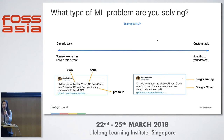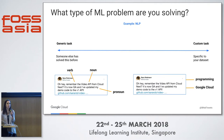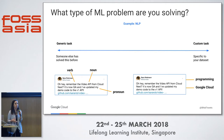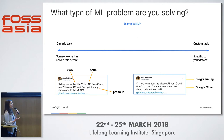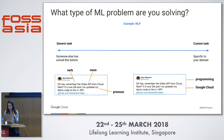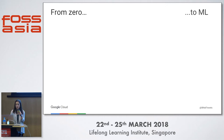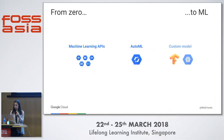Thinking about this in terms of natural language processing: if I just want to extract parts of speech from a tweet, that's a pretty common NLP task and I can utilize an existing model. But if I want my model to recognize that a tweet is about programming — more specifically about Google Cloud — I'll need to train a model from scratch, giving it thousands of tweets about programming and Google Cloud so it knows what to look for. In this talk I'm going to show you a bunch of different products on Google Cloud Platform that will help you go from zero to machine learning.